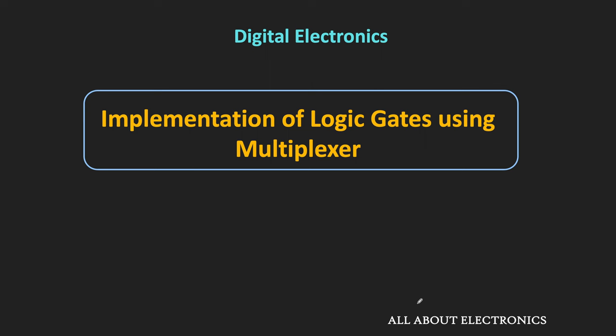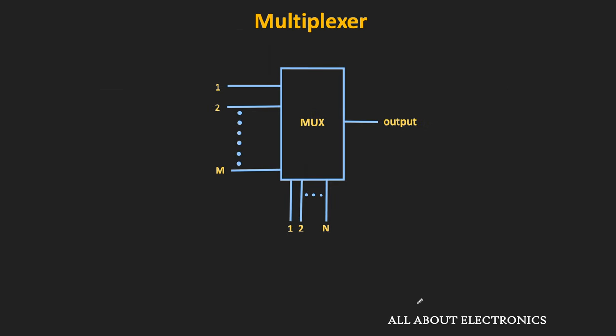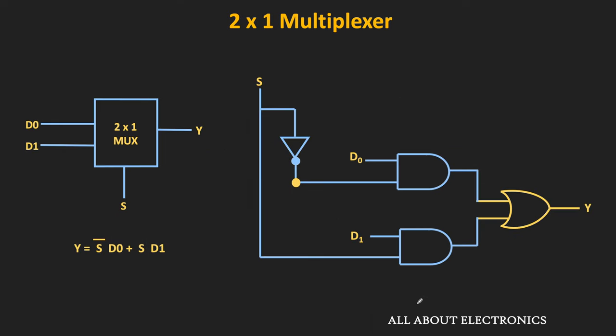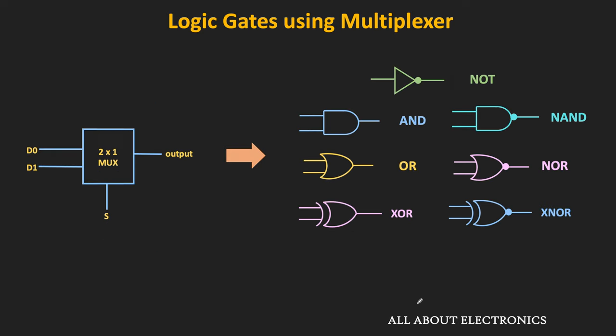Hey friends, welcome to the YouTube channel All About Electronics. In the previous video, we learned about the multiplexer and saw how to design different Boolean functions using the multiplexer. In this video, let us see how to design different logic gates using the multiplexer. The multiplexer itself is made up of different logic gates, but sometimes if different logic gates are not available and we have some multiplexer ICs, we can use that multiplexer IC to implement different logic gates. Let us see how to implement different logic gates using the 2-to-1 multiplexer.